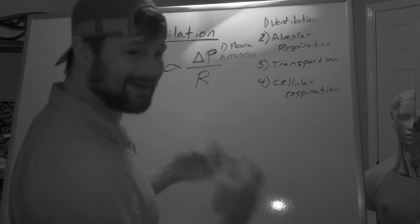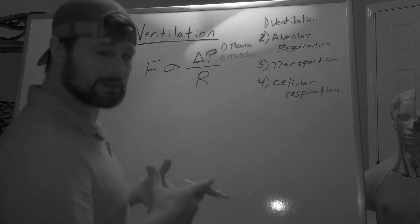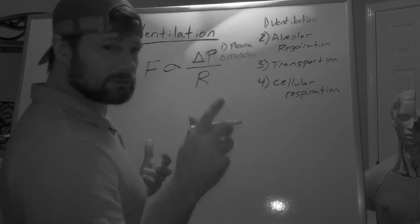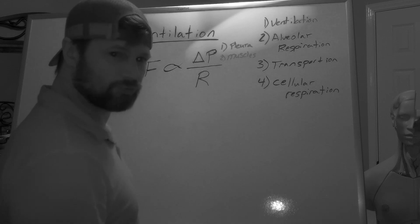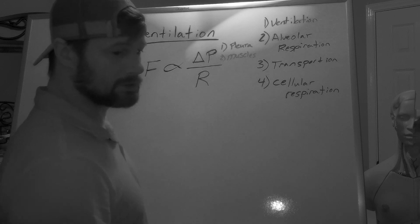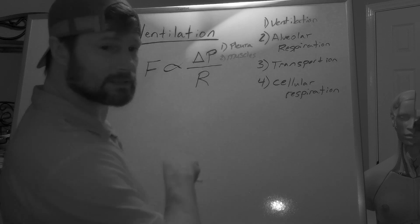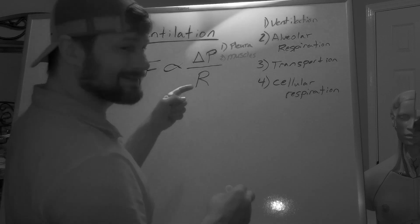So the second major thing that determines the pressure gradient is muscles. Diaphragm, first and foremost, external intercostal muscles. Those are going to be really important in inhalation. Exhalation, we're going to have to relax those muscles. And if we want to force breathing out, we'll start involving other muscles. Again, you're going to see those on the PowerPoints that I post. We're going to come back to that in just a second.